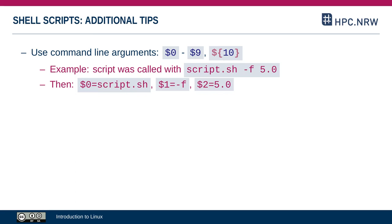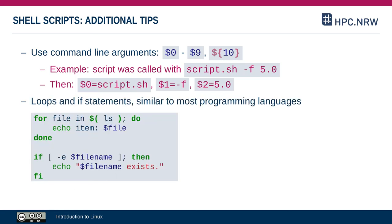There are also constructs like loops and if statements, similar to most programming languages. For example, this for loop would run over all files in the current directory, because the ls command presents a list of files. The $() syntax gives the output from the ls command to the loop, and then the for loop will do the same action for every file — in this case, it will simply list every file name.